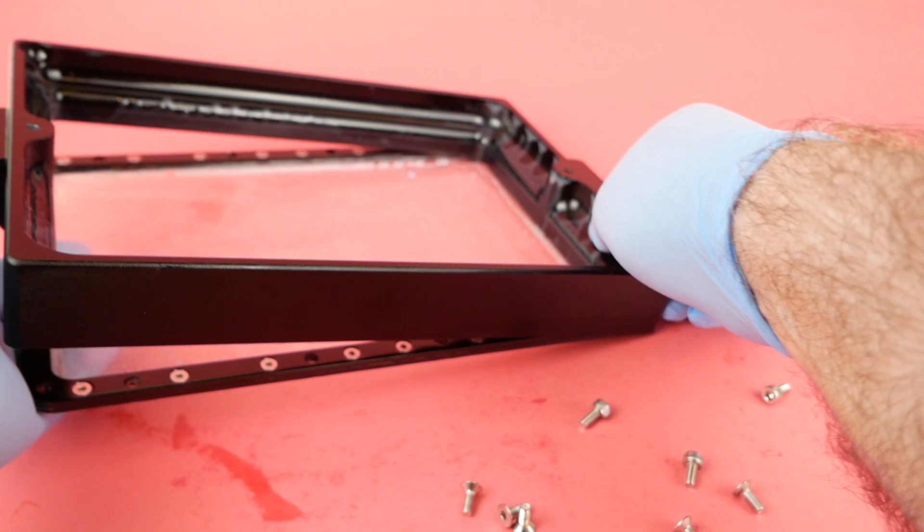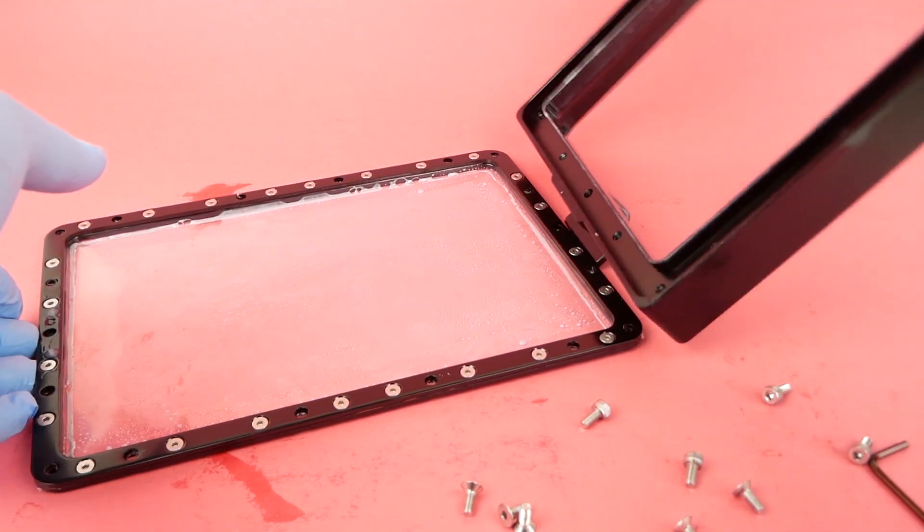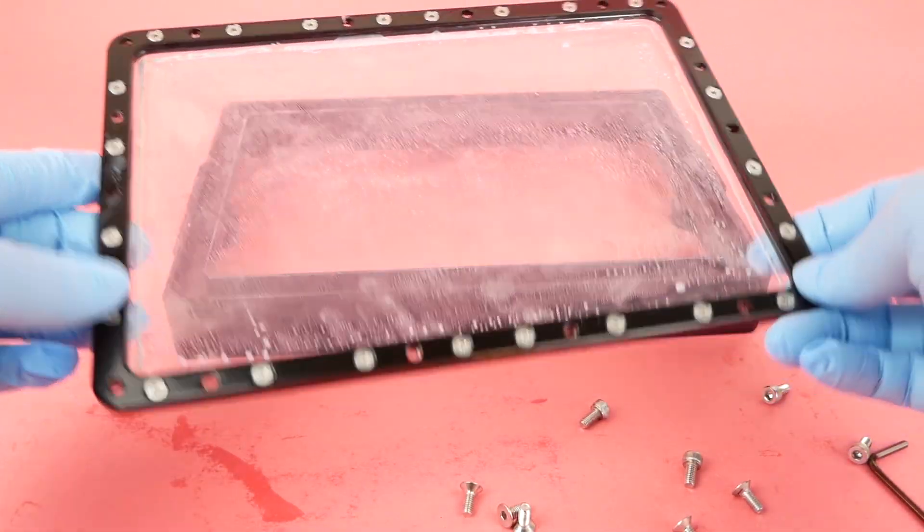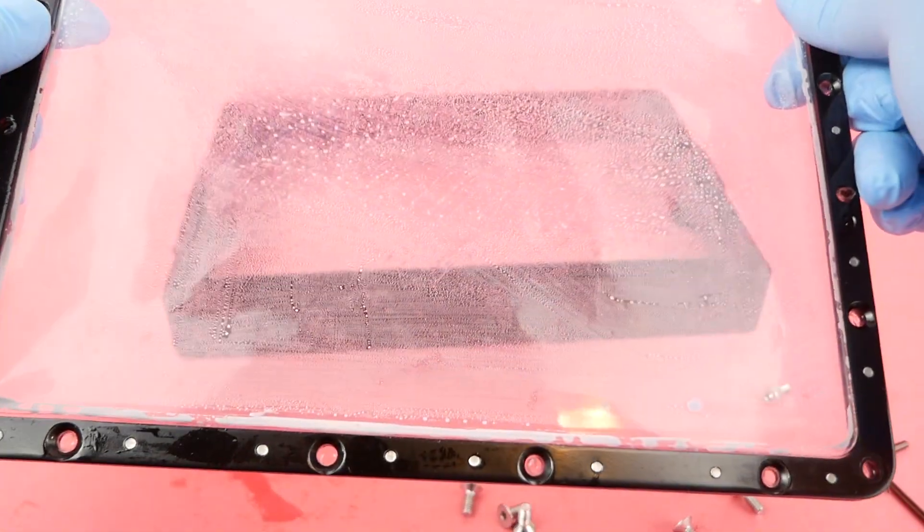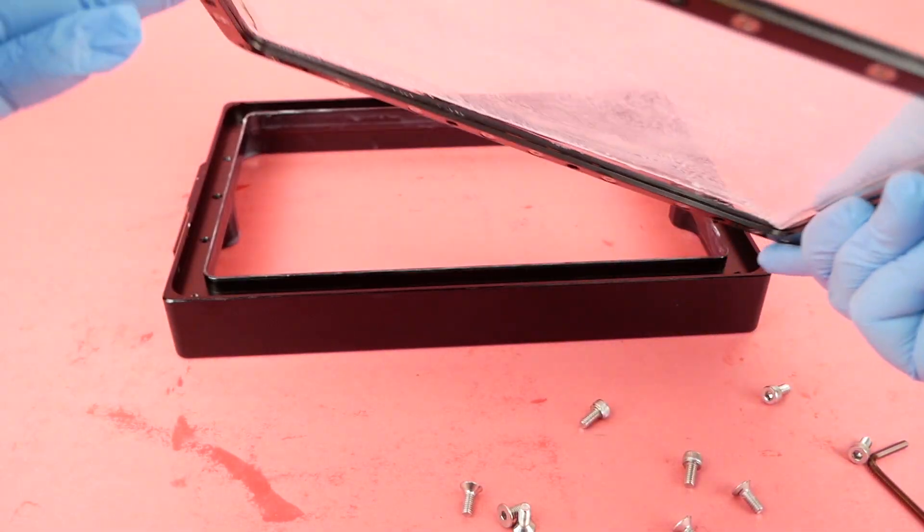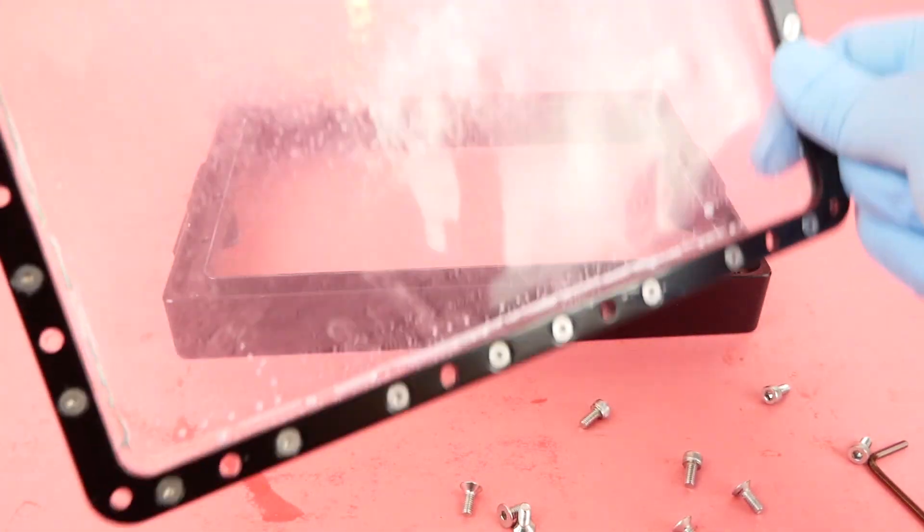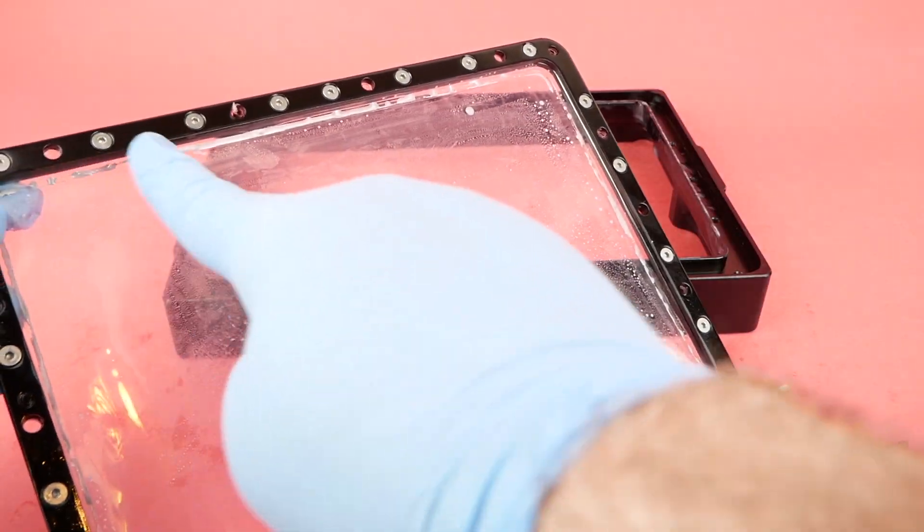But you're not done yet. There's still more bolts for you to remove on this second section here of the frame. There's 24 on this part. These are holding together two thin metal frames that kind of sandwich the film in between them. So you have to undo all of those all the way around here.